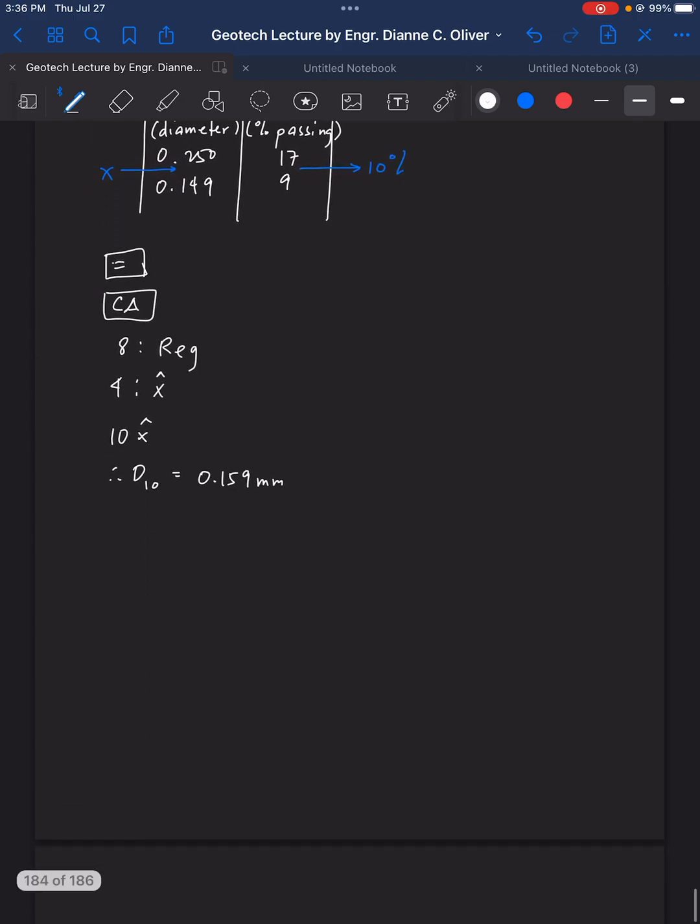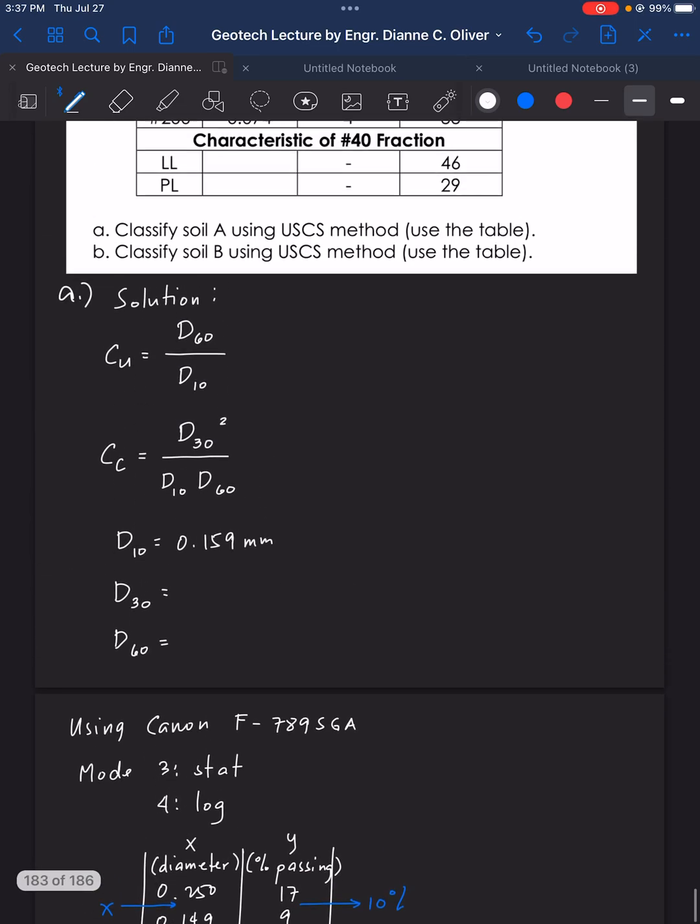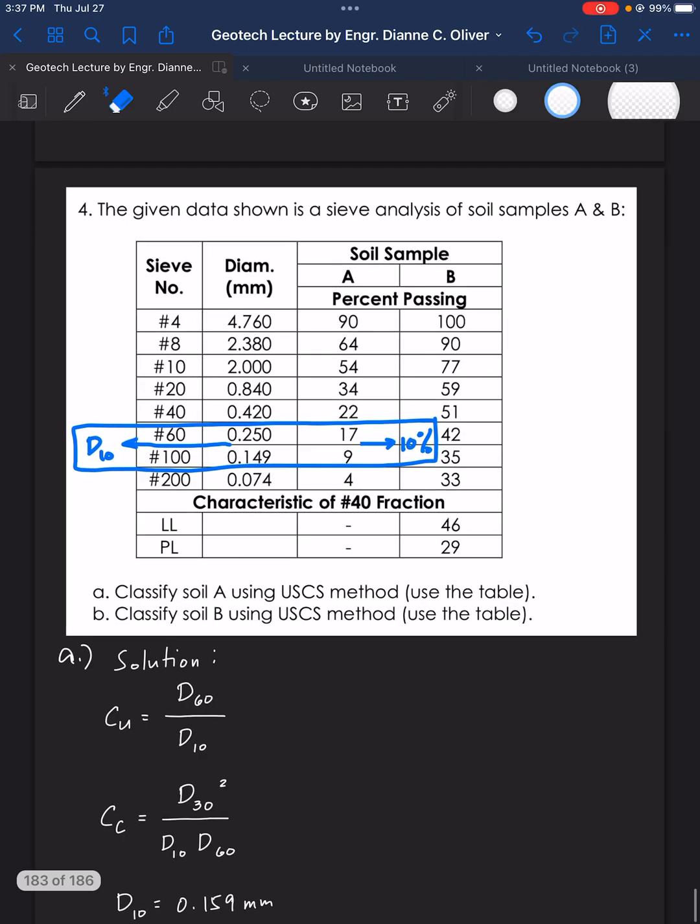Then, you do the same for the D30. For D30, you click there, start again, the mode. Click there, mode. Then, choose 3, start. Mode, 3, start, 4, log. And then, we have the column, X and Y. Going here, from our given, where is D, 30 percent?